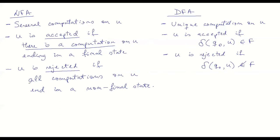We reject the word if all possible computations, however many there may be, end in a non-final state. The main conceptual difficulty with non-deterministic finite automata is really this: to check whether a word is rejected or accepted, you might have to check all possible computations. You don't know which one to check — you have to check all of them.